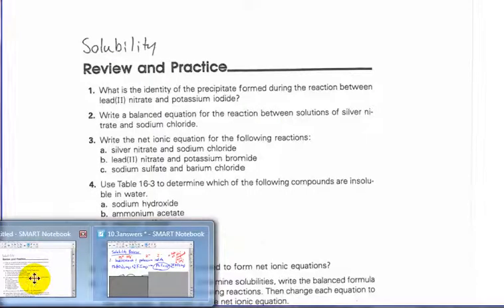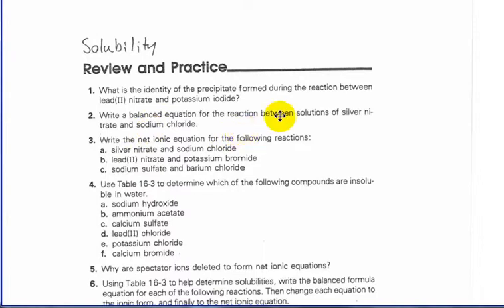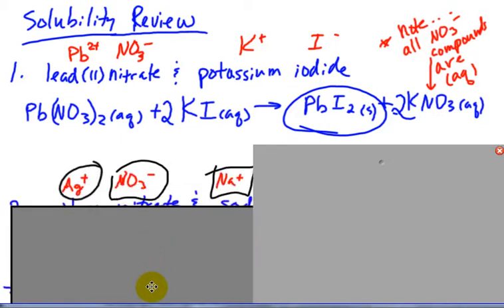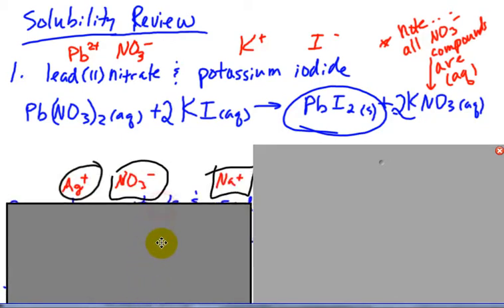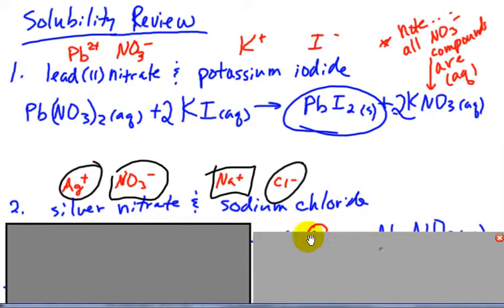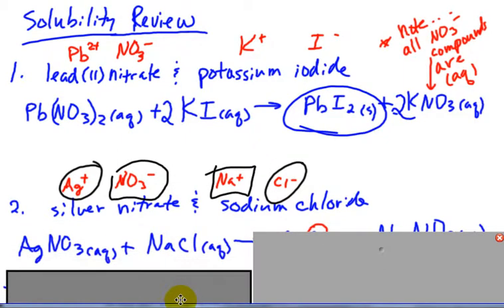That's how you use that chart. For question 2, write a balanced equation for the reaction of silver nitrate and sodium chloride. Look at your pink sheet and figure out what these ions are: Ag+, NO3-, Na+, Cl-. They come together in a 1 to 1 ratio: AgNO3, NaCl.